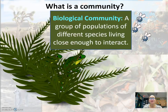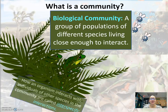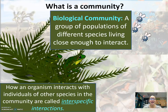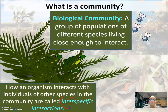A biological community is a group of populations of different species living close enough together to interact. How an organism interacts with individuals of other species in the community are called interspecific interactions — like the frogs and the flies. That's an interspecific interaction.